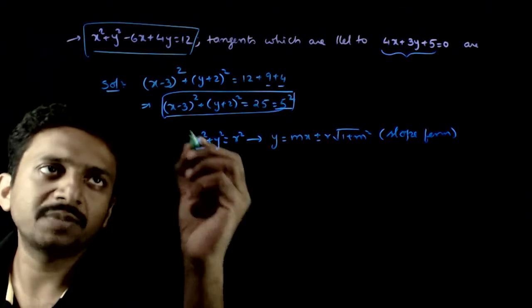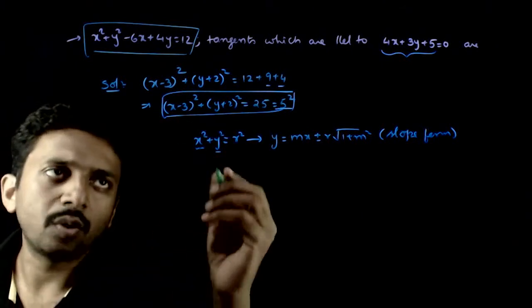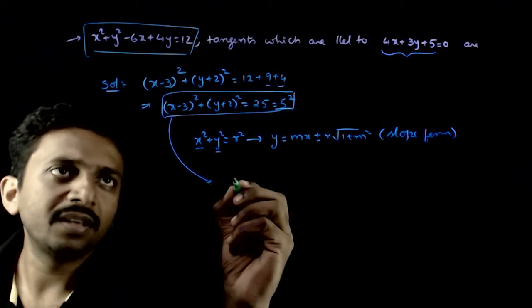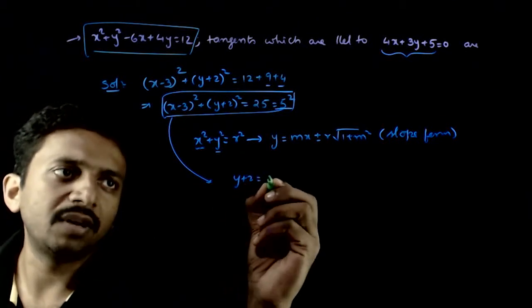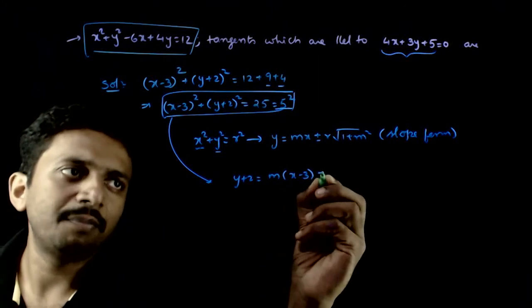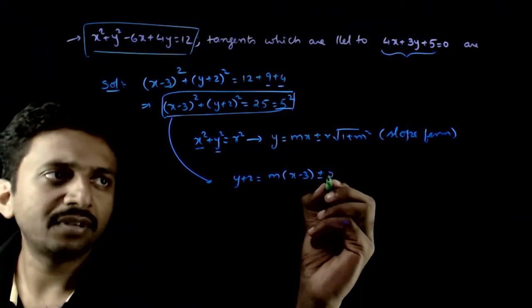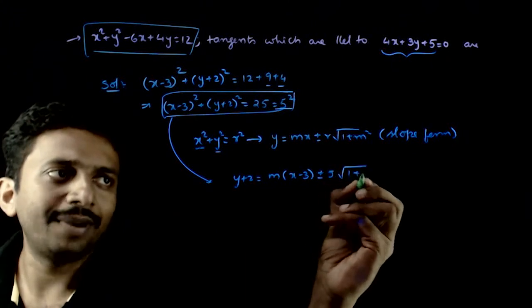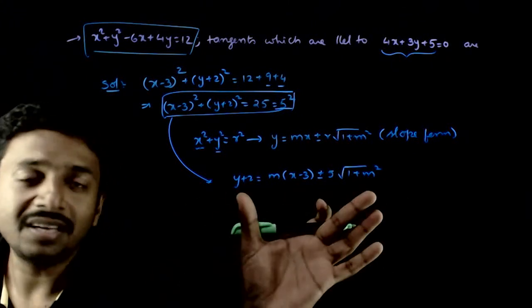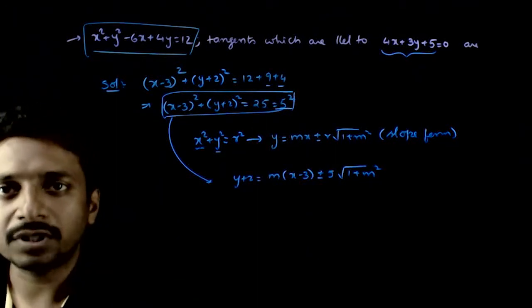In place of x we have x minus 3, and in place of y we have y plus 2. So, what is the general form of tangent to this circle? y plus 2 is equal to m times (x minus 3) plus or minus r, and my r is 5, so plus or minus 5 times root of 1 plus m squared. This is the general tangent to this circle of slope m.